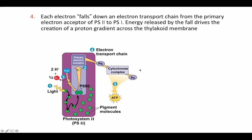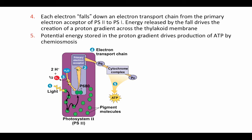Energy released by this fall down the electron transport chain drives the creation of a proton gradient across the thylakoid membrane — it powers proton pumps that actively transport protons from the stroma into the thylakoid space. Now we have a proton motive force — the potential energy stored in that electrochemical gradient — which, just as in cellular respiration, drives the production of ATP by chemiosmosis using ATP synthase in the thylakoid membrane. As protons move from the thylakoid space back out into the stroma, ATP is generated.